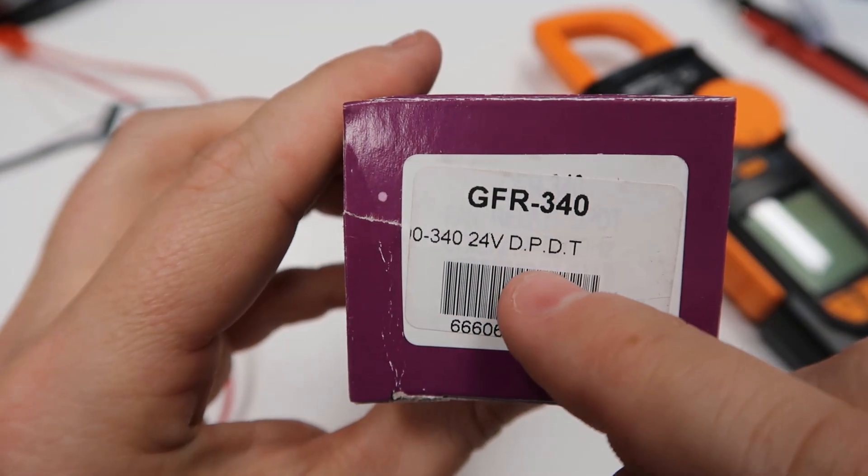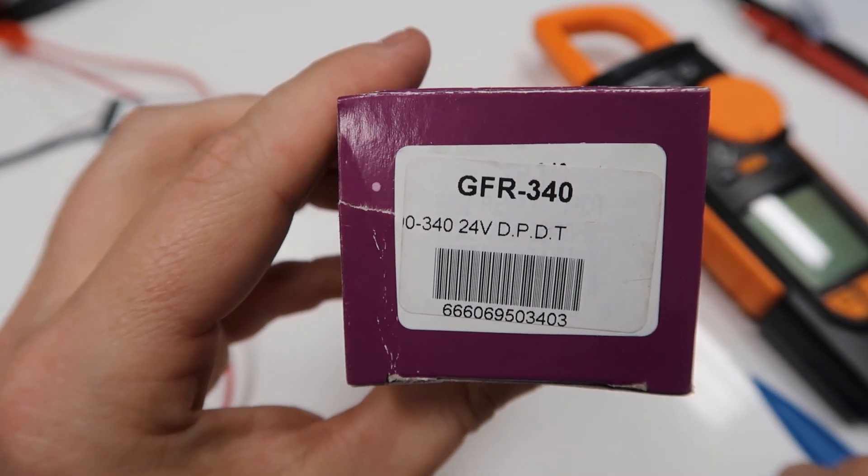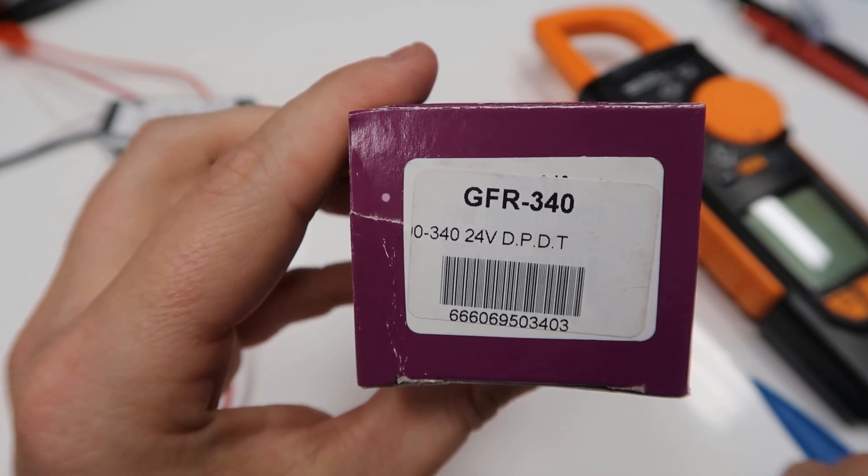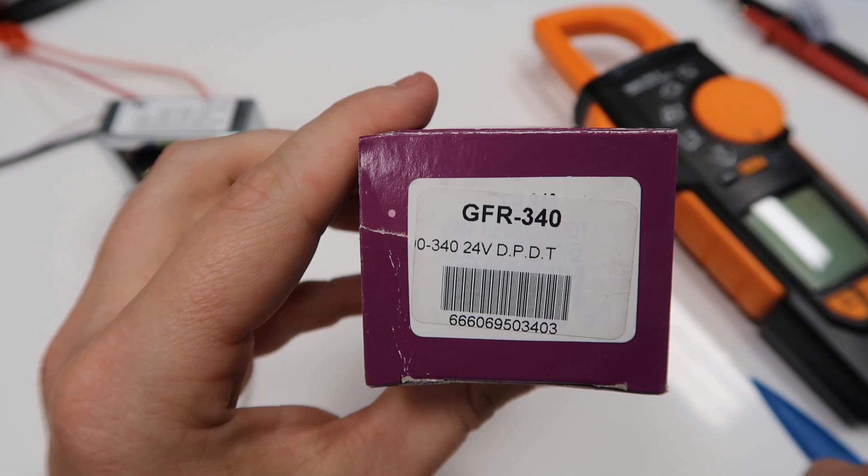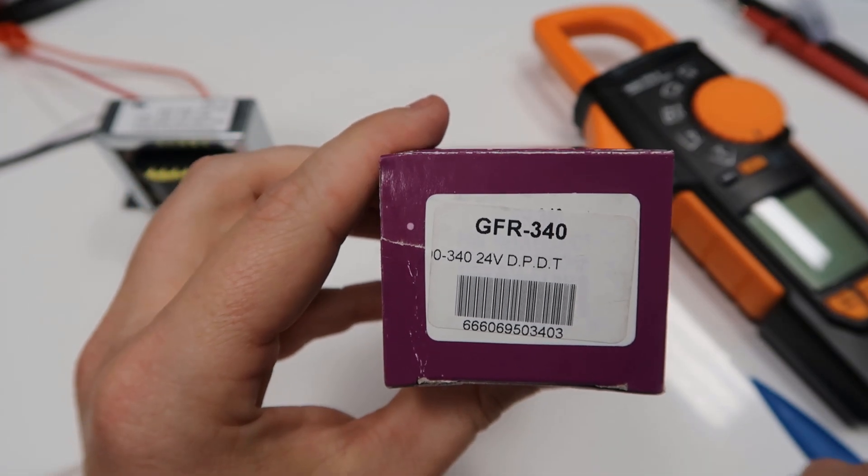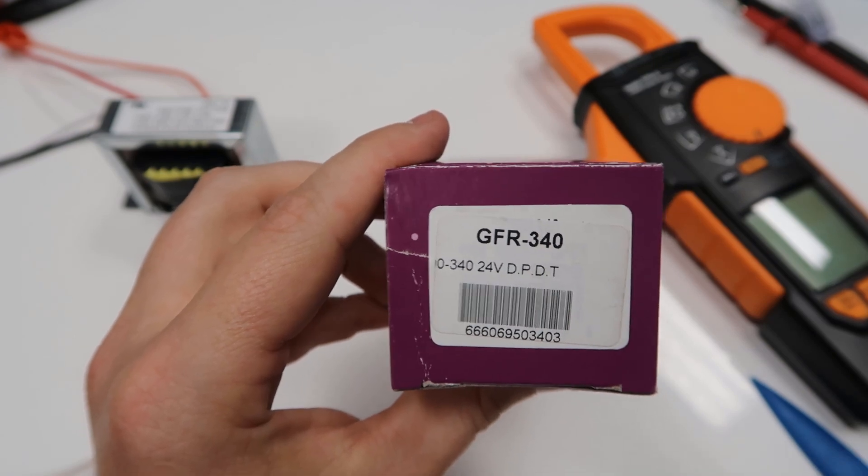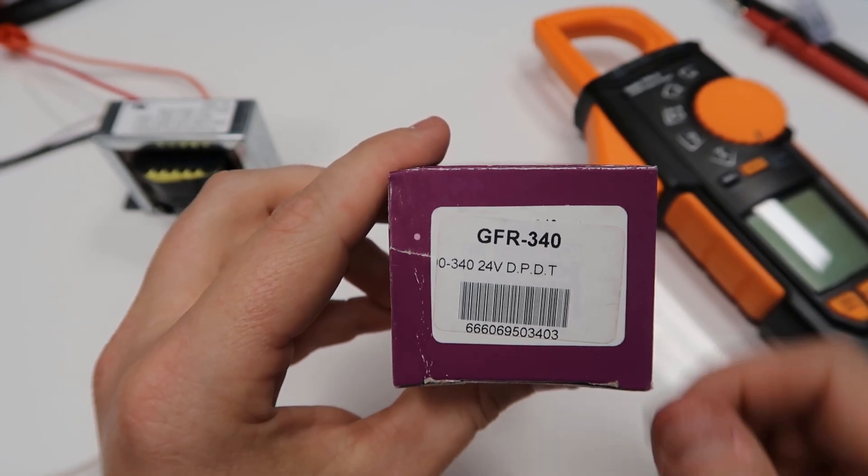This stands for double pole, double throw. The throw is the part of the relay that actually moves, and the pole is the part that it connects to. So a double pole, double throw relay can have both normally closed contacts and normally open contacts.